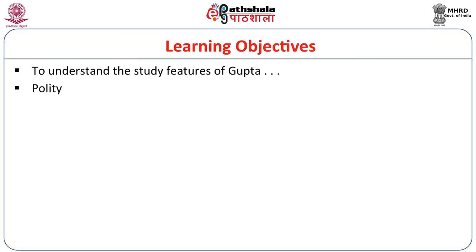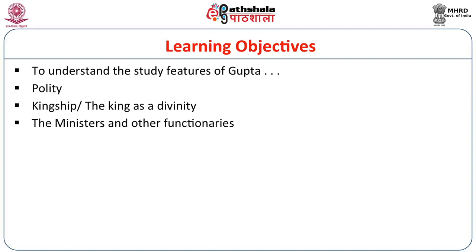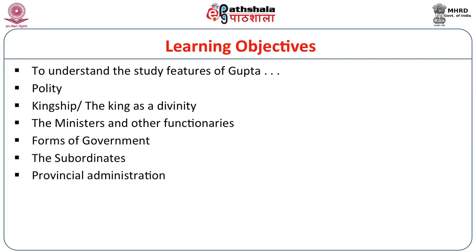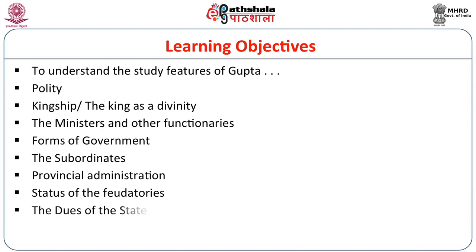Here are our learning objectives. First, we shall study the sources from which we can reconstruct a picture regarding the polity and administration of the Guptas. Then we shall study the theories of kingship written during the Gupta period, how the king has been represented in texts and inscriptions as a divinity to strengthen his power. Then we shall study ministers and other functionaries, forms of government, subordinates, provincial administration, dues of the state, the judicial system, and then conclude our lecture.